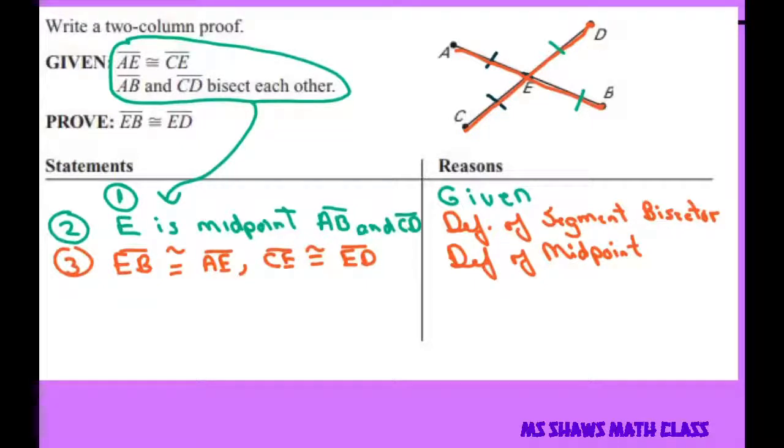Number four we're going to say that AE is congruent to ED, and that's the transitive property.